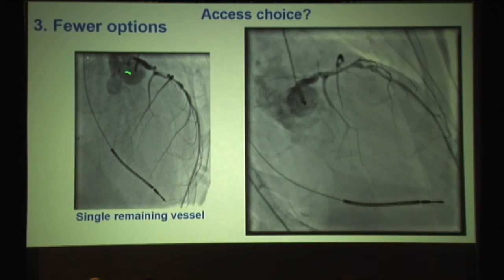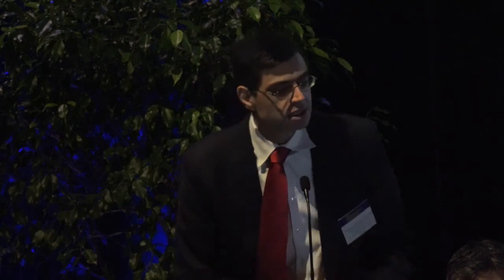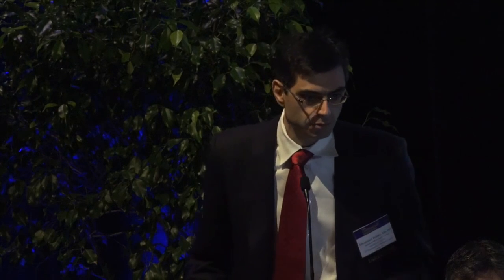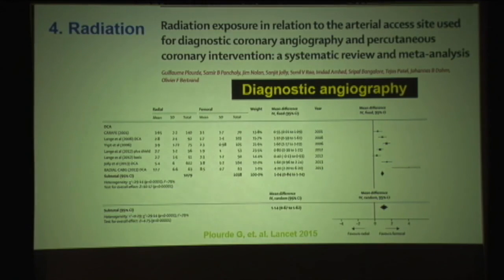Reason three: if you're doing a case on a left main single last remaining vessel, do you want to do this with a six or seven French radial? Or have an eight French femoral and an Impella? It's your life.